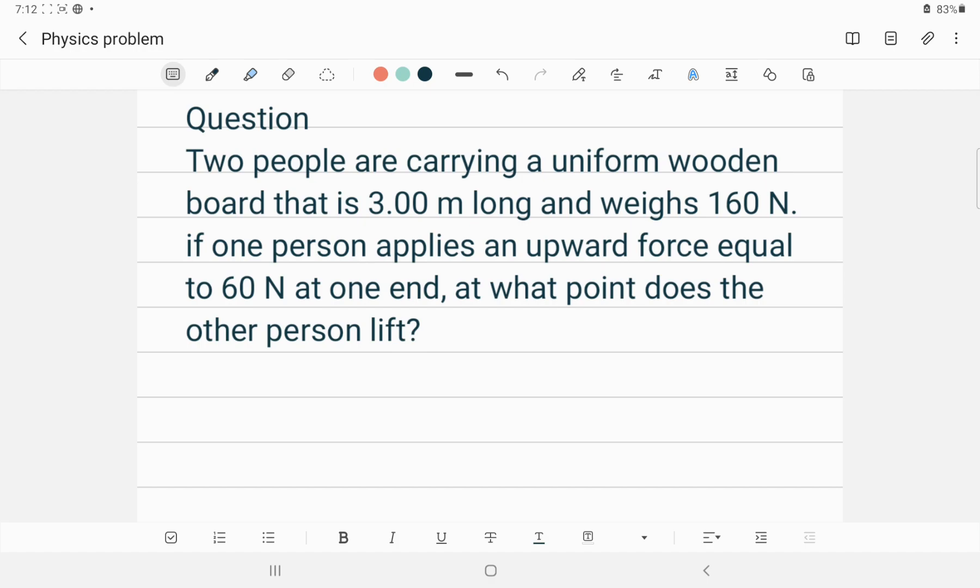There are two conditions for equilibrium. One is the sum of all the forces acting on the body should be zero to have a particle in translational equilibrium.